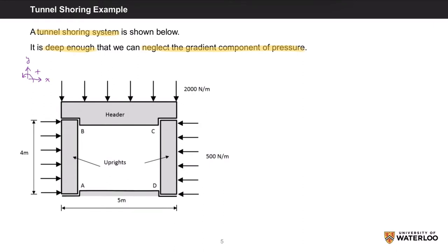We must break up the system into its separate members in order to solve for all of the reactions. So we'll have a total of three members to analyze: the header and the two uprights. I'll draw all the forces and reactions acting on each member.